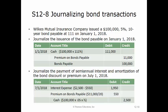To journalize the semi-annual interest and amortization of the bond premium on July 1st, we debit interest expense for $1,950, which is the difference between the cash of $2,500 and the premium amortization of $550. We debit premium on bonds payable for $550, equal to $11,000 divided by 20 semi-annual periods. Last, we credit cash for $2,500, equal to $100,000 times 5% divided by 2.